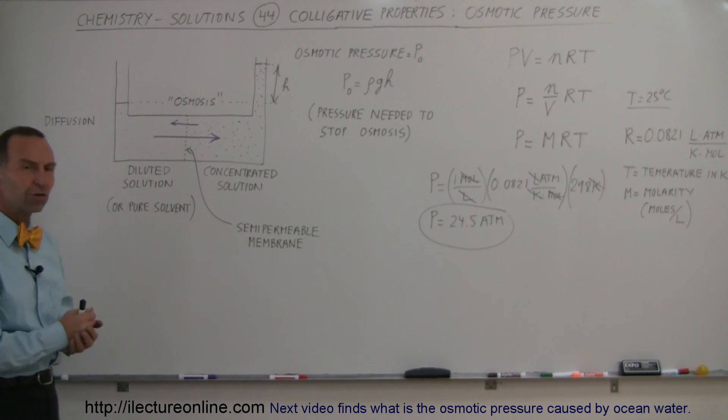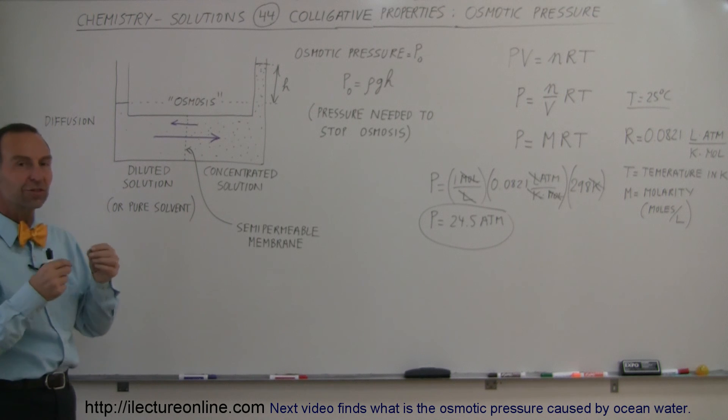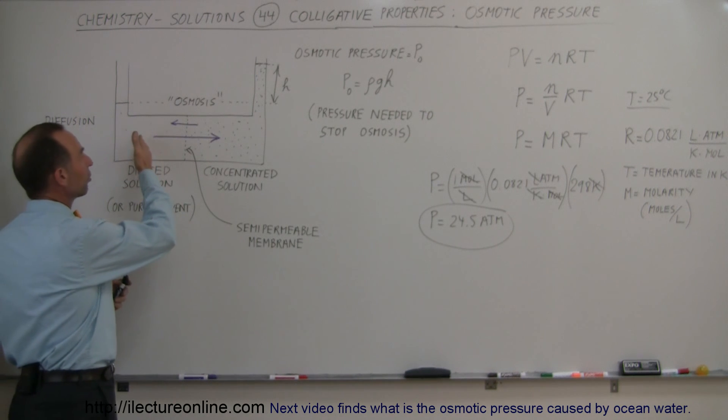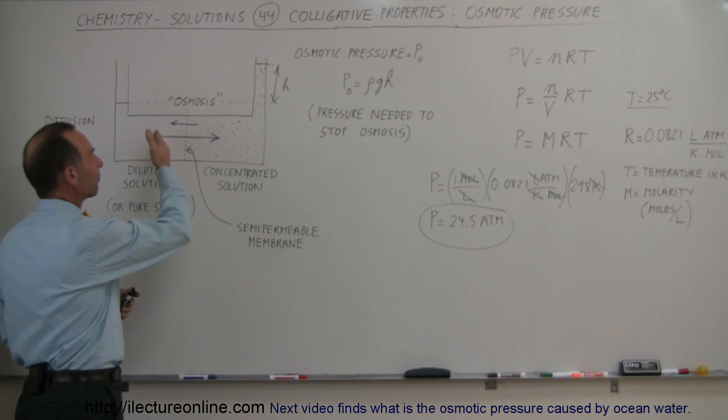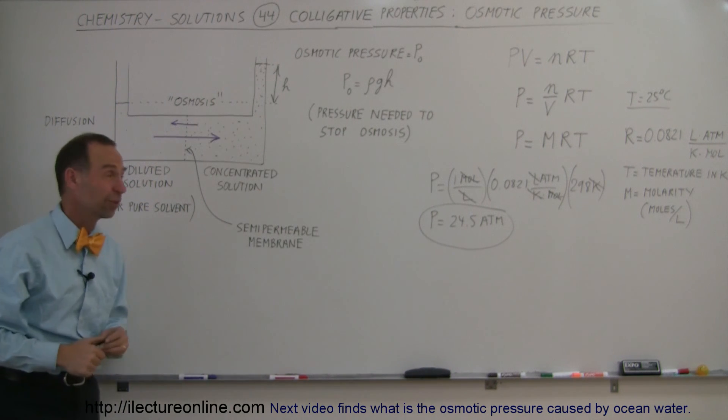Osmotic pressure—the numbers are staggering, just unbelievable, simply because of statistical difference in that more water molecules will travel from left to right than from right to left, and you could set up this enormous pressure of 24.5 atmospheres.